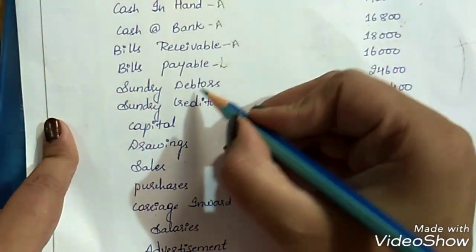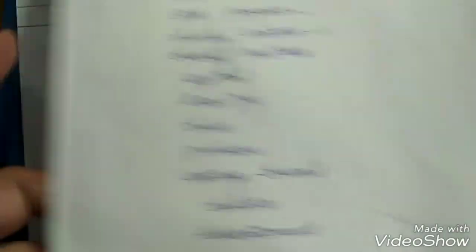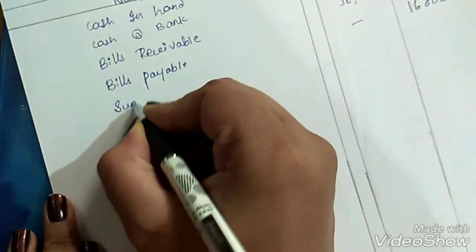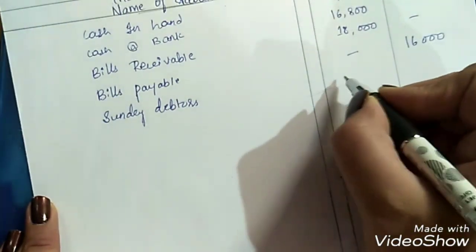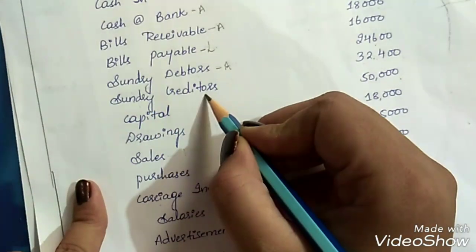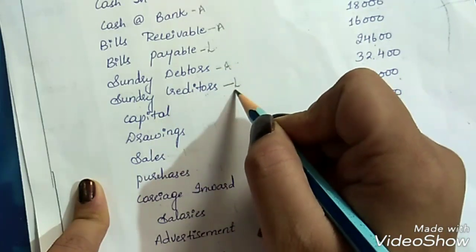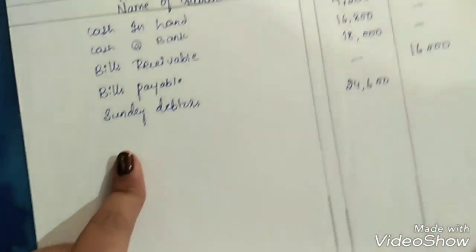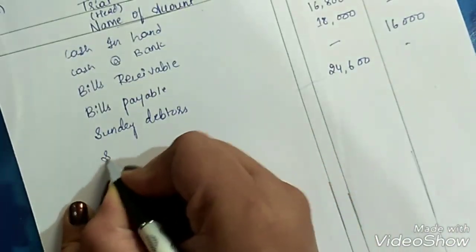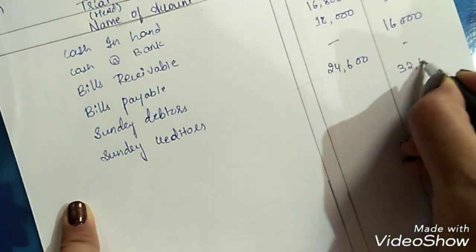Next, sundry debtors. Debtors are our assets, so record them on the debit side. Amount is Rs. 24,600. Next, sundry creditors. Creditors are our liabilities — when debtors are our assets, creditors are our liabilities. Amount is Rs. 32,400; record it on the credit side.